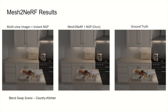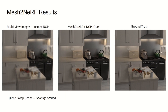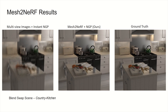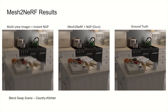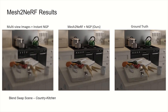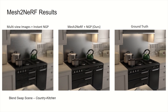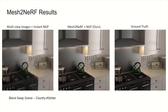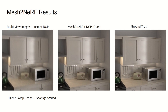Here, we show the results of optimizing a single scene using a neural field. We compare our approach, which uses the same network architecture as Instant NGP, with a variation where we replace its multi-view supervision with our Mesh2NRF ground truth radiance field supervision.